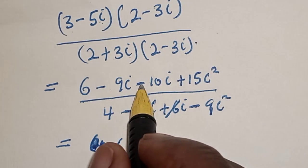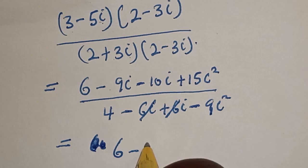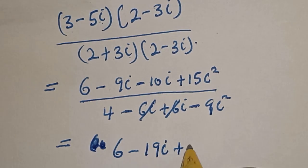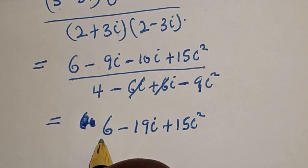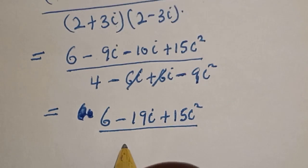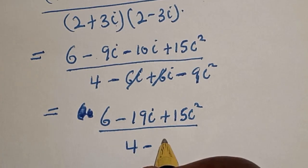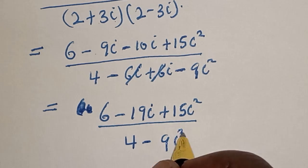Then, minus 9i minus 10i. This is minus 19i plus 15i squared divided by 4 minus 9i squared.